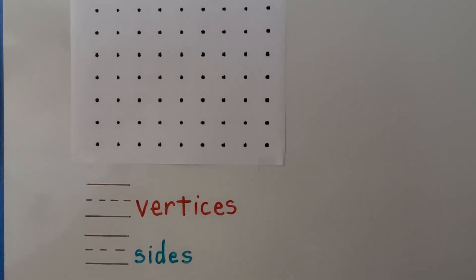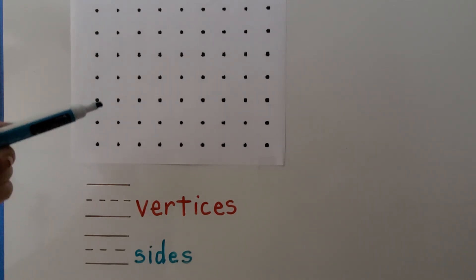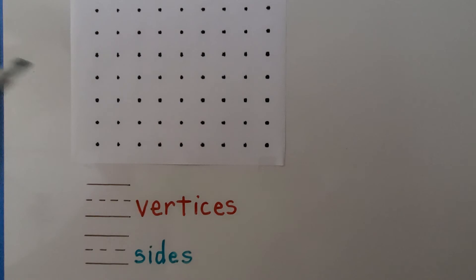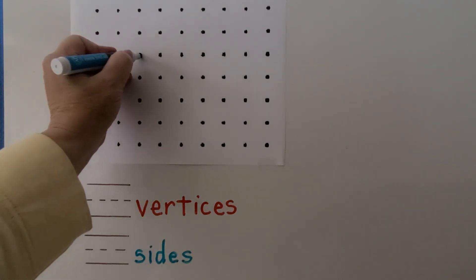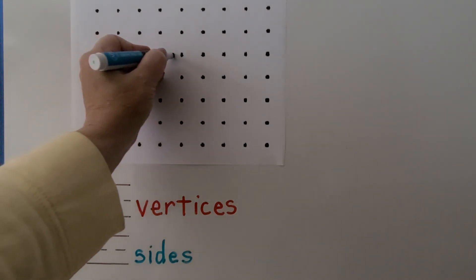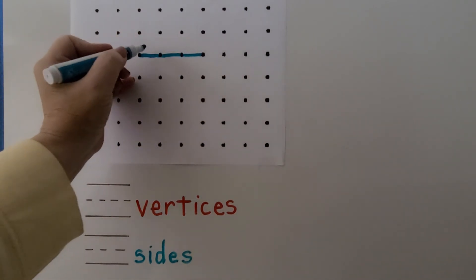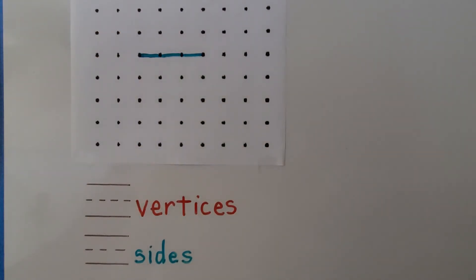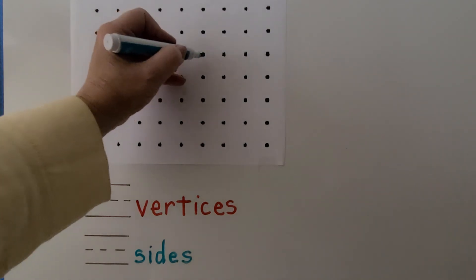We can draw a square on dot paper by making four lines of equal length. Each line will have the same number of spaces between their dots. If we draw a straight line with three spaces between its ends — one space, two spaces, three spaces — then the other lines must also have three spaces between their ends to make a square.